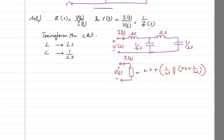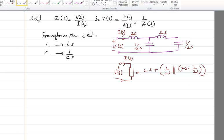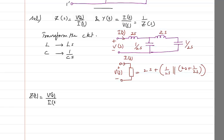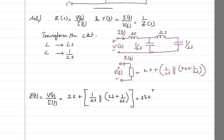There is no need to do any mesh analysis or nodal analysis for this particular case. So Z(s) is equal to V(s) by I(s), which is going to be 2s plus the parallel combination of 1 by 2s with 2s plus 1 by 2s. Now I will write the parallel combination. The parallel combination is going to be 1 by 2s in parallel with — now this one I have to solve — which is going to be 4s² plus 1 divided by 2s.